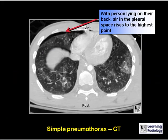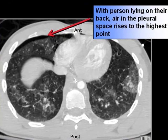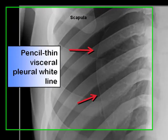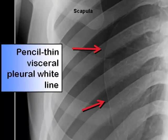This is a CT scan of the chest in a patient with a simple pneumothorax. With the person lying on their back, which is how most CT scans are obtained, air will rise in the pleural space to the highest point — just underneath the anterior chest wall — as evidenced by this black crescent. On conventional radiography, pneumothoraces must demonstrate the pencil-thin visceral pleural white line, which is the visceral pleura separated from the parietal pleura by air in the pleural space.